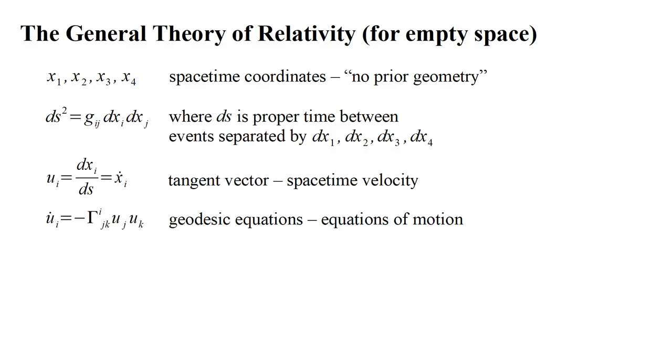The equations of motion give us the four accelerations, u dot i, in terms of the four velocities and the so-called Christoffel symbols, gamma i j k, which are derived from the metric tensor. These geodesic equations express the fact that of all possible ways for a clock to move between two spacetime events, the natural or free-fall motion is that which typically results in the largest possible clock reading.